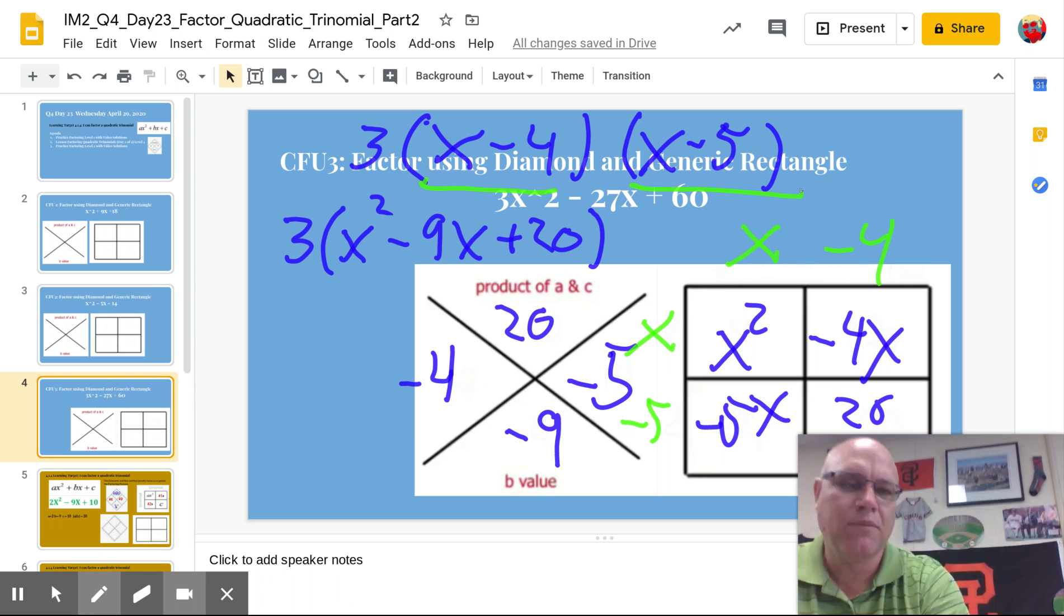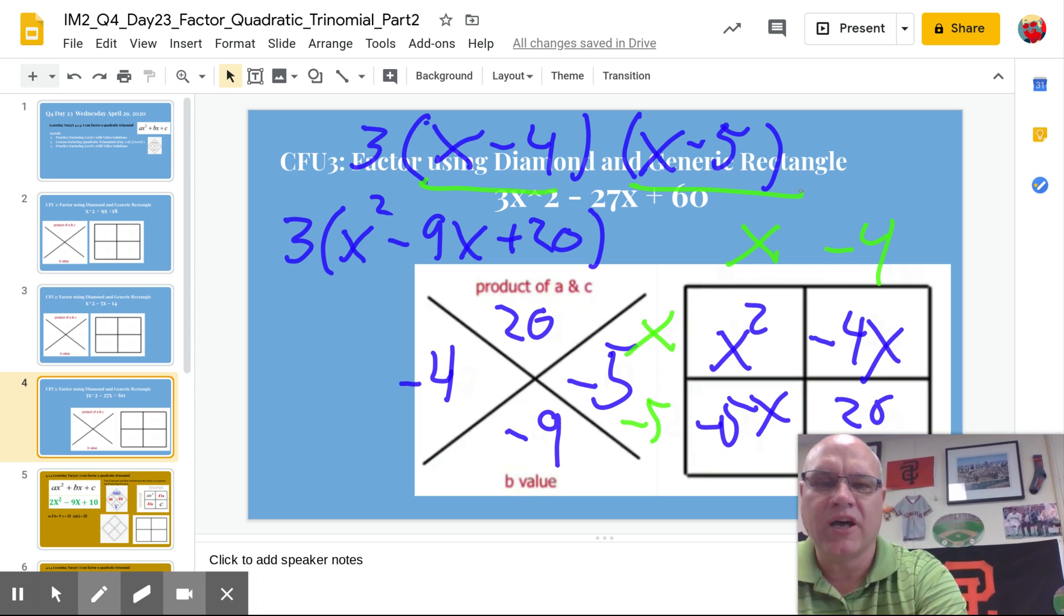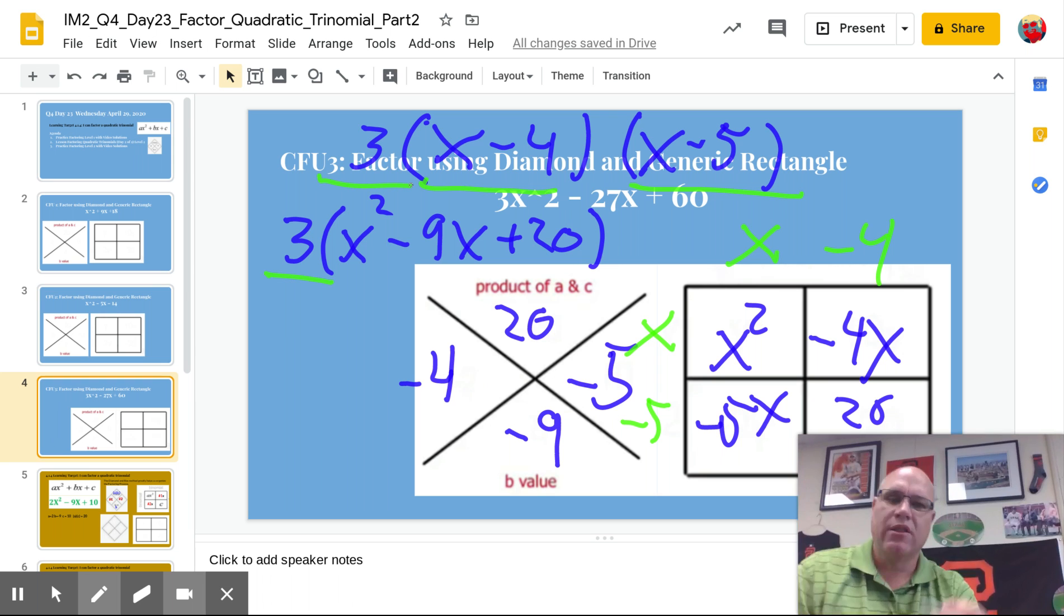Boom boom. And then we don't forget the greatest common factor we pulled out has to be there. So we have three factors. 3, x minus 4, and x minus 5 are our three factors. All right. That's as hard as it gets when the a value is 1.